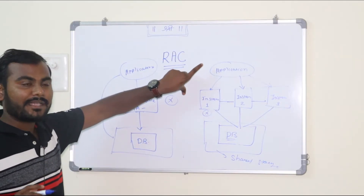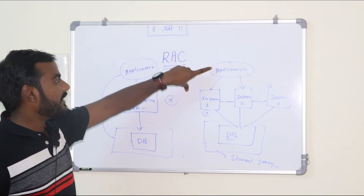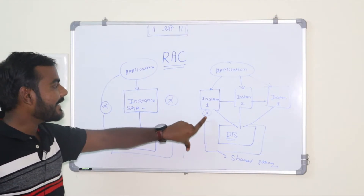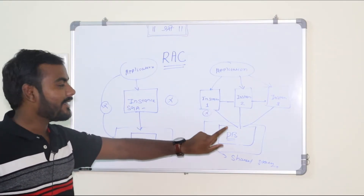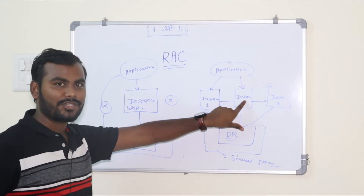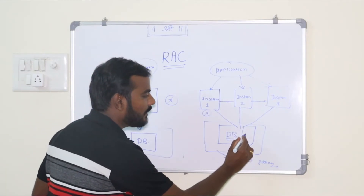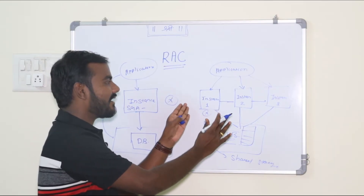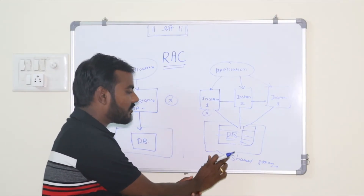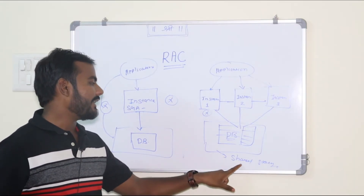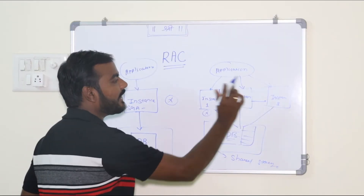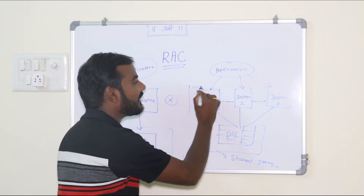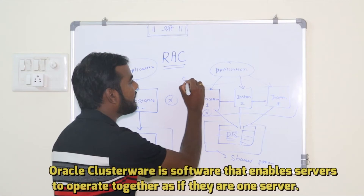When a user connects through instance number one and adds some data, that data goes into the shared database. Another user connecting through instance number two also writes to the same database. So all three instances are sharing the same database, which is why we need the database in shared storage. These instances are connected to each other and together they form a cluster - in this case, a three-node cluster.